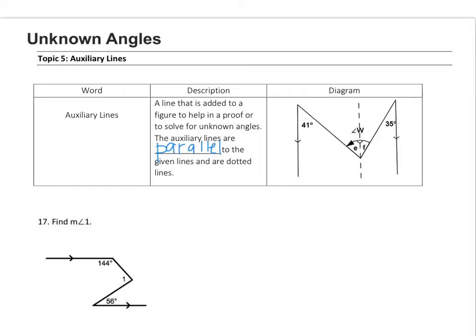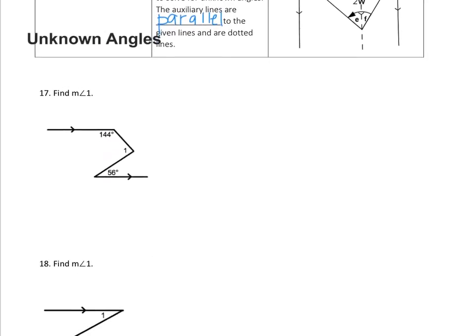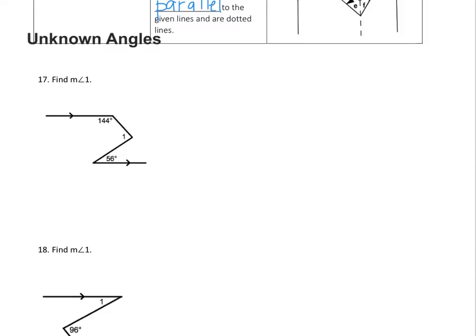So we're going to see an example down here, number 17. Our goal is to find the measure of angle 1. I can see it's very difficult to find the measure of angle 1 because I don't have just a nice Z. I don't have any alternate exterior angles or corresponding angles. So I'm going to first start by drawing in an auxiliary line.